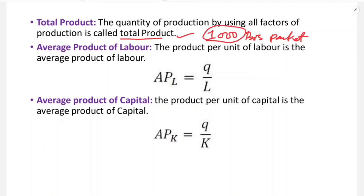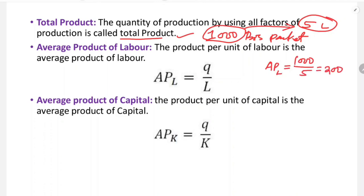The next concept is average product of labor. The average product of labor is the total product per unit of labor. For example, if total product is 1,000 and labor units are 5, then the average product of labor equals 1,000 divided by 5, which is 200.